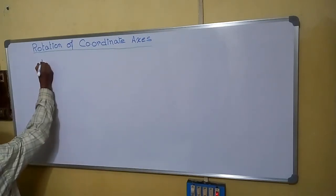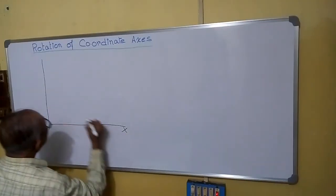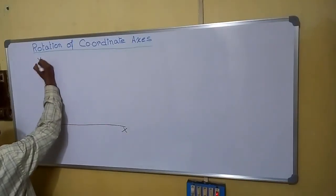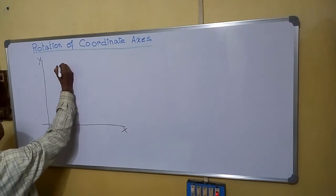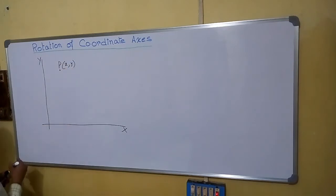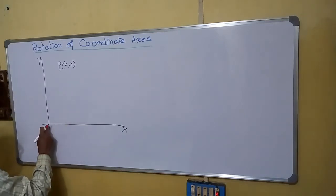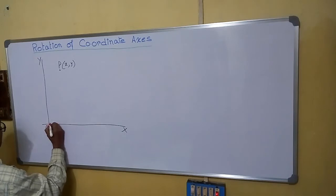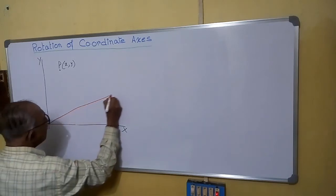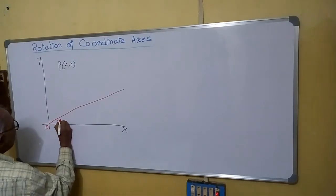Let us assume this is our original coordinates x and y. Let us further assume here is a point P whose Cartesian coordinate is x and y. Now we can assume that we are rotating this axis keeping the origin without changing it. Let us assume we are rotating it through an angle theta.